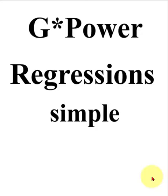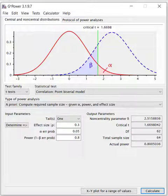We're going to use G-Power to calculate the minimum sample size needed to run a simple regression. A simple regression is like a correlation. There's one IV and one DV. This should be quick and easy.